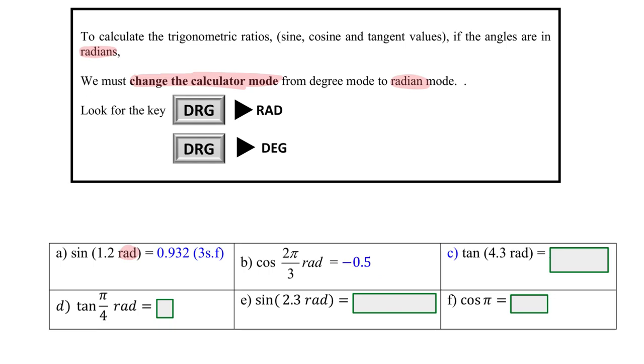For tangent π/4, part D, you get 1. For sine 2.3 radians, you should get 0.746 rounded off to three significant figures. And for cosine π, you should get negative 1.